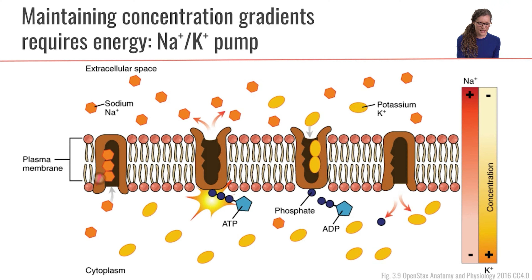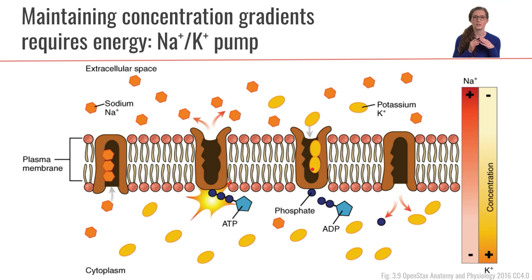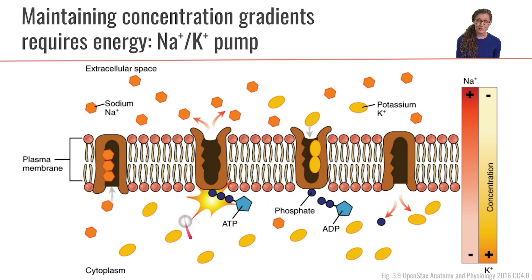The sodium-potassium pump starts by facing the inside of the cell, taking three sodium ions from inside, and then using ATP — the energy currency of the cell — to change its conformation and expel those sodiums to the outside. When the transporter is open toward the extracellular space, it picks up two potassium ions, then reverts to face the inside of the cell and releases those two potassium ions there. This process requires ATP and energy. As we discuss more metabolism, we'll learn that supplying ATP to the sodium-potassium pump is one of the biggest uses of energy in the human body.